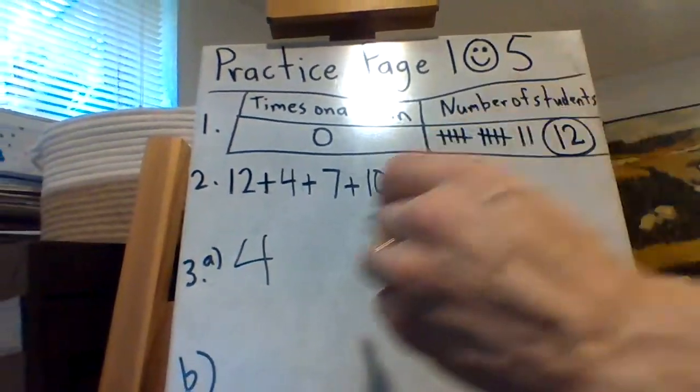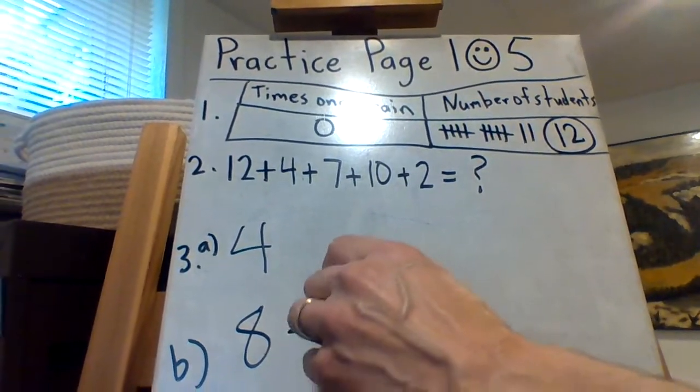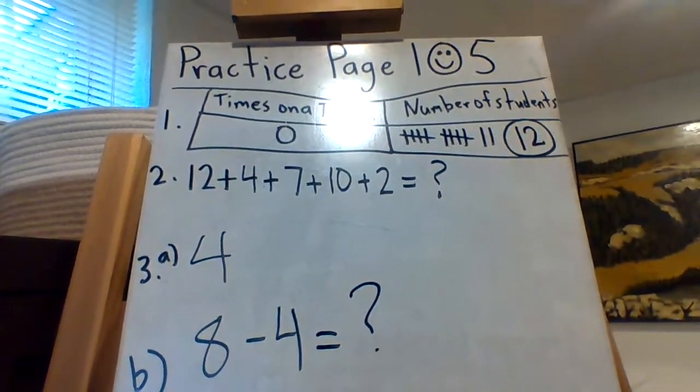So they're asking how many more though. So there's eight right-handed minus the four left-handed. I'm pretty sure you know the answer to that one. There you go.